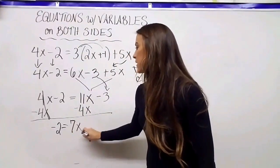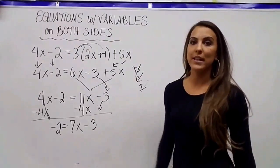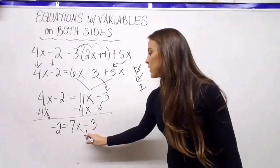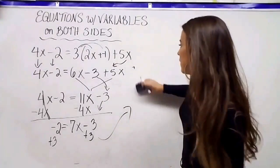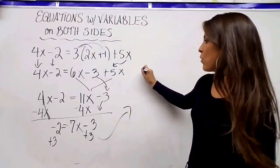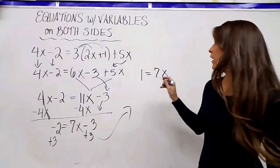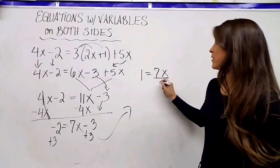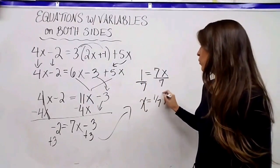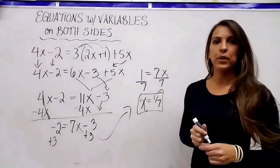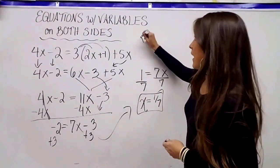Now I have a two-step equation. I add 3 on both sides: negative 2 plus 3 is 1, so I have 1 equals 7x. One step away — x is being multiplied by 7, so I divide both sides by 7. x equals 1/7.